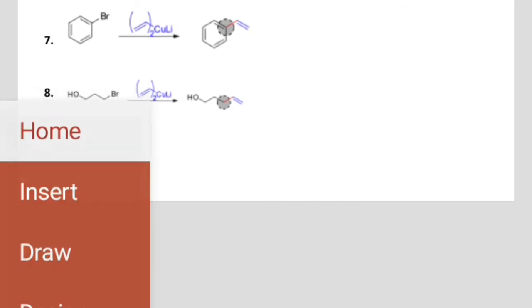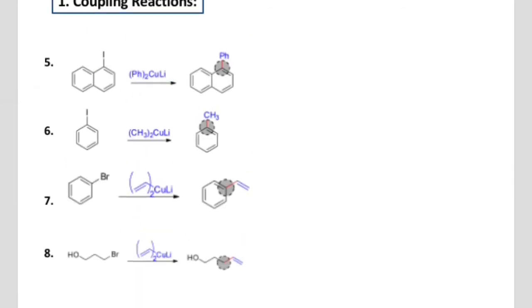First of all, what are coupling reactions? As discussed in the previous video, coupling reactions are those in which one group will be replaced with a second one. Here is the example: iodine will be replaced with the phenyl group. The overall structure will remain the same; the Gilman reagent will attack on the carbonyl carbon.